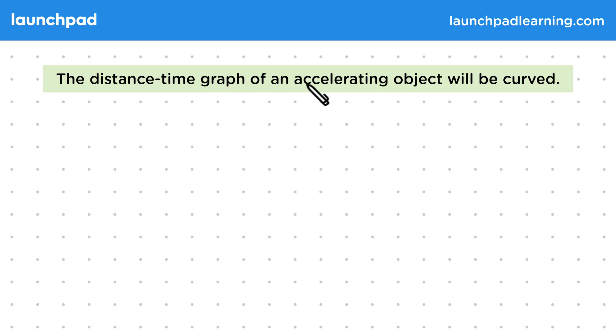The distance time graph of an accelerating object will be curved. A distance time graph tells us how the total distance travelled by an object changes over time, with the gradient of the graph being equal to its speed.